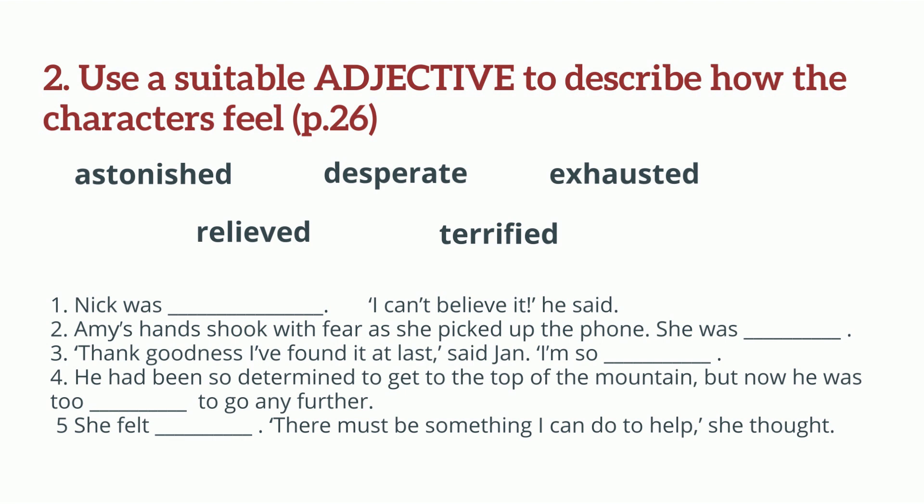Spend some time to find the meaning of these words. Now let's try number one. Nick was... 'I can't believe it,' he said. The answer is Nick was astonished, meaning greatly surprised. For numbers two, three, four, and five, it's your turn to try. Good luck!